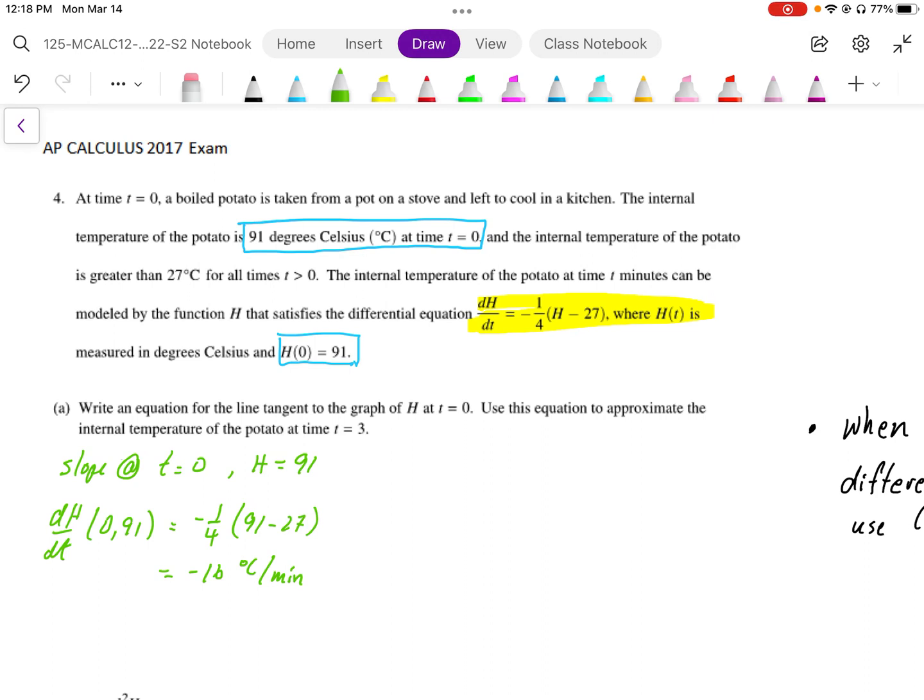Once we have that slope, we can now put it into our tangent line equation. Our tangent line equation is going to be y equals, we need our slope, so negative 16 times x minus 0 plus 91. So there's our tangent line equation.